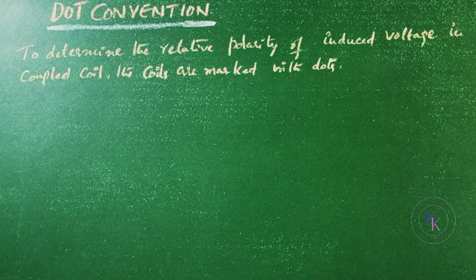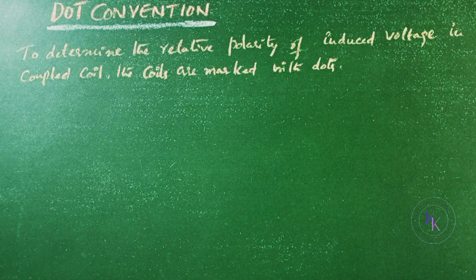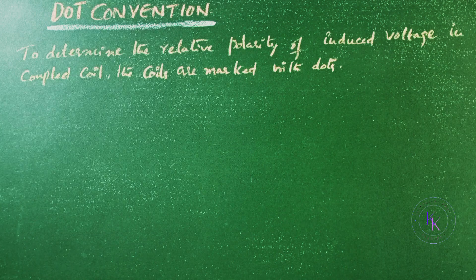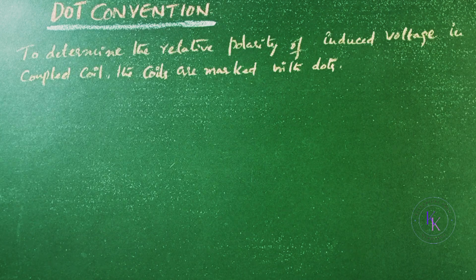Dot convention in coupled coils. To determine the relative polarity of induced voltage in a coupled coil, the coils are marked with dots.